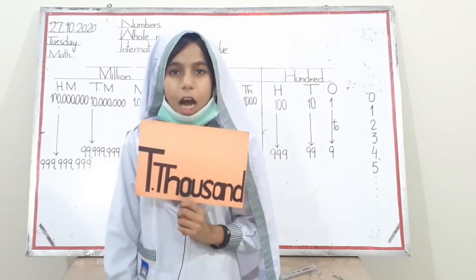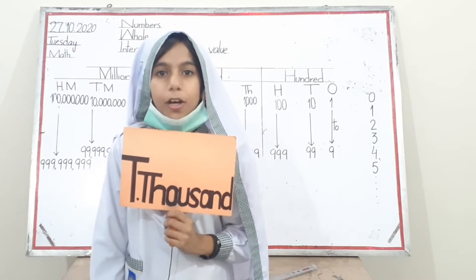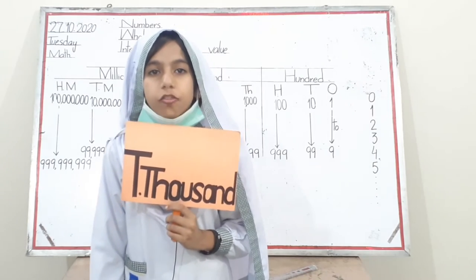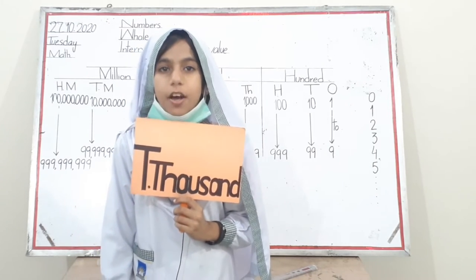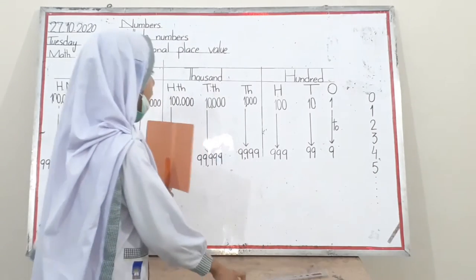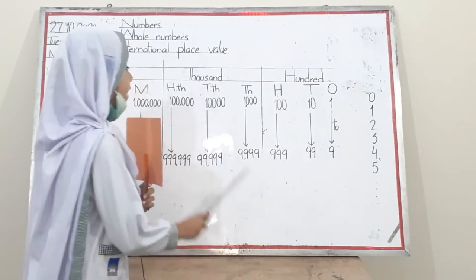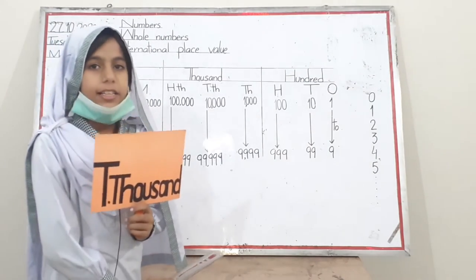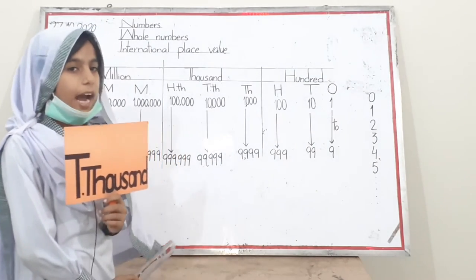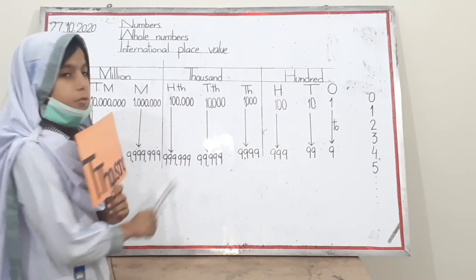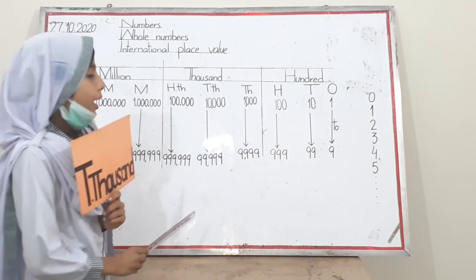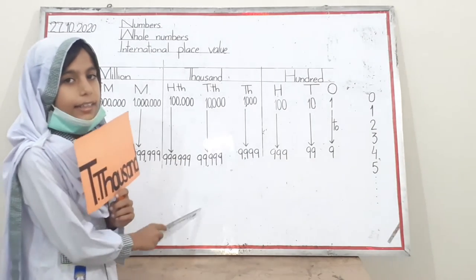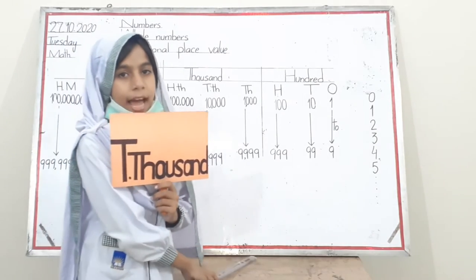Hi friends, I am ten thousand, a member of the thousand family. I show five digits, for example ten thousand to ninety-nine thousand nine hundred and ninety-nine. Ten thousand is my smallest number and ninety-nine thousand nine hundred and ninety-nine is my biggest number. Thanks.